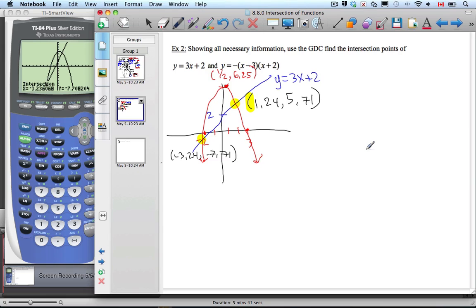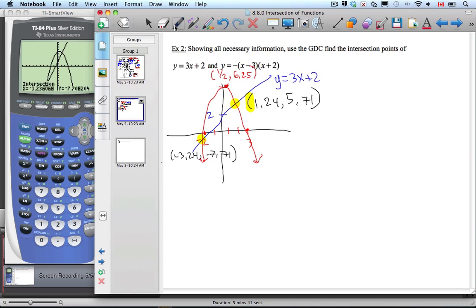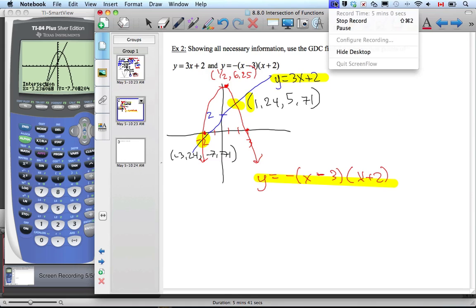So to get full credit on this, what we'd like you to see is the line is labeled and the curve is labeled, which we have to do still. We forgot that. Our curve is y = -(x-3)(x+2). And so we got our curve labeled, our line labeled, and our points of intersection labeled. And it's a reasonable sketch as to what is shown.